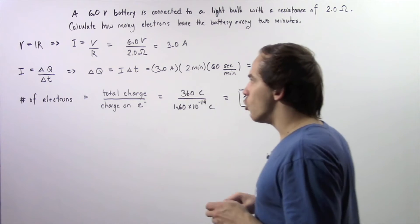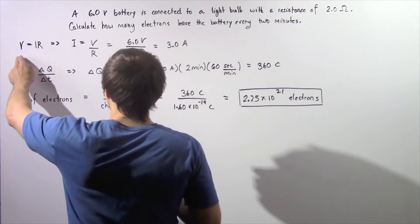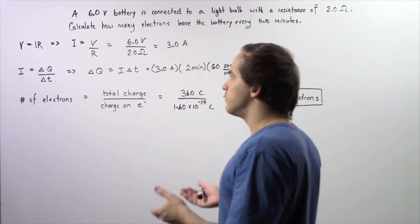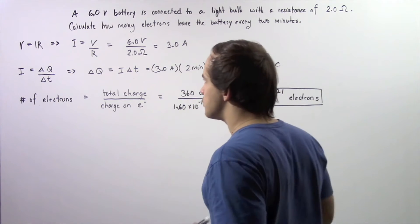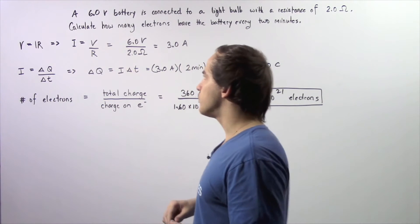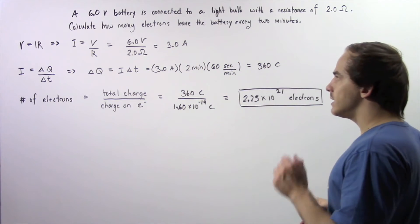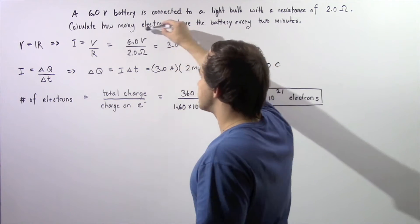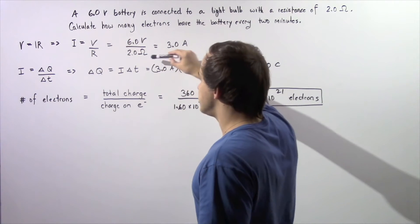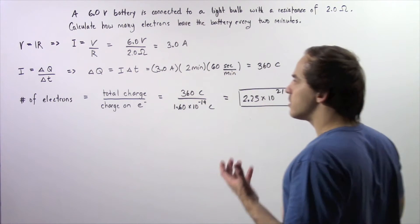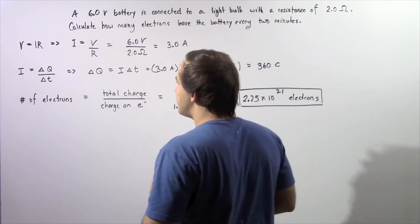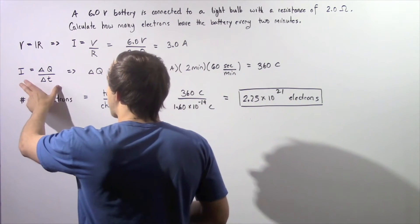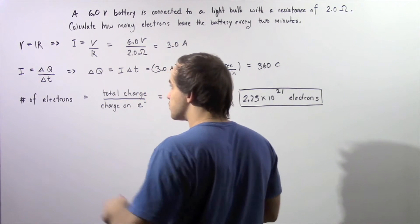Let's begin by applying Ohm's Law. Ohm's Law states that voltage is equal to the product of the resistance and the electric current. So we use that equation, rearrange it, and solve for I. The I is equal to the voltage, 6 volts, divided by the resistance, 2 ohms, which gives us 3 amperes.